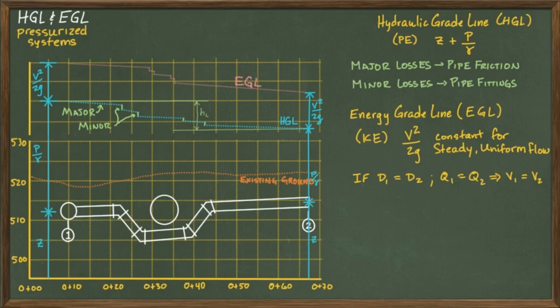Now, some students get hung up for a minute when they see the pipe slope up as it's going in the direction of flow. And they might be tempted to think, shouldn't the energy also increase? If the elevation is increasing, then isn't the potential energy as well?